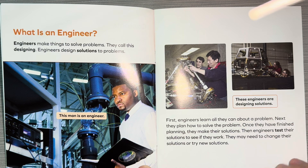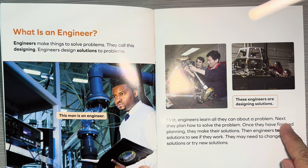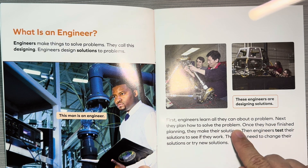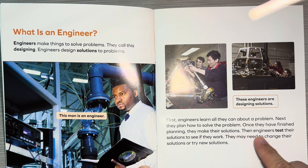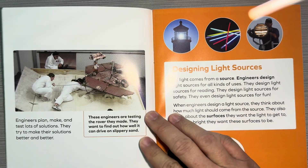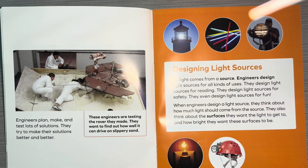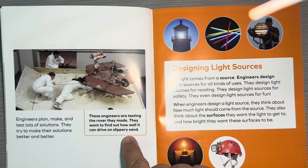These engineers are designing solutions. First, engineers learn all that they can about a problem. Next, they plan how to solve the problem. And once they have finished planning, they make their solutions. Then engineers test their solutions to see if they work. They may need to change their solutions or try new solutions. Engineers plan, make, and test lots of solutions. They try to make their solutions better and better. These engineers are testing the rover they made. They want to find out how well it can drive on slippery sand.